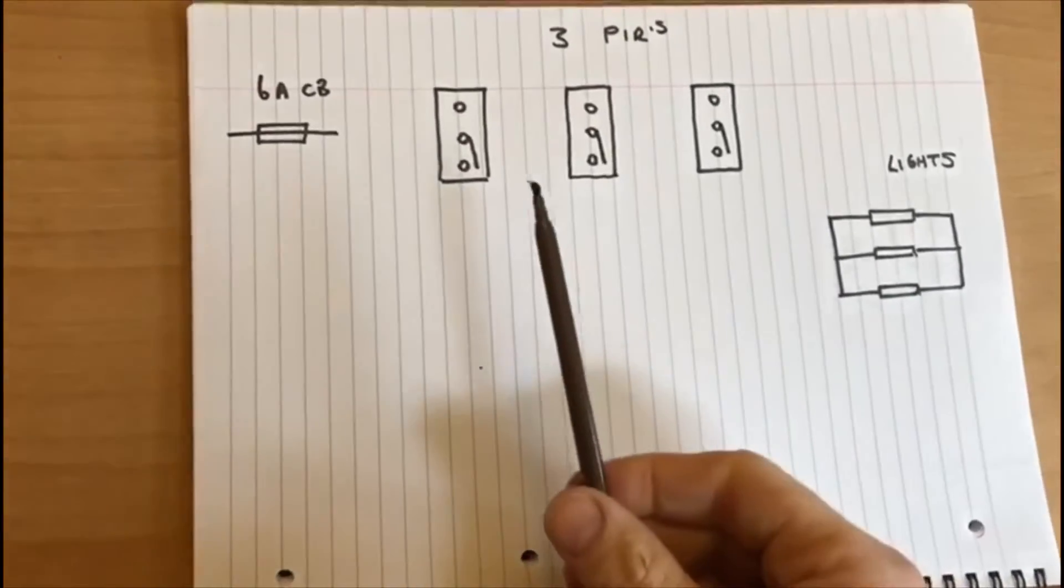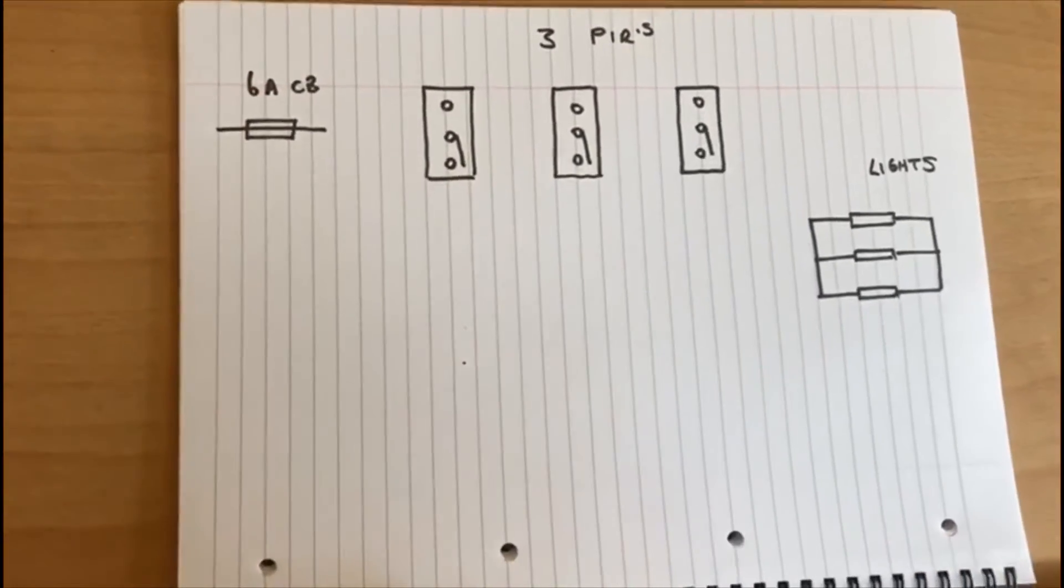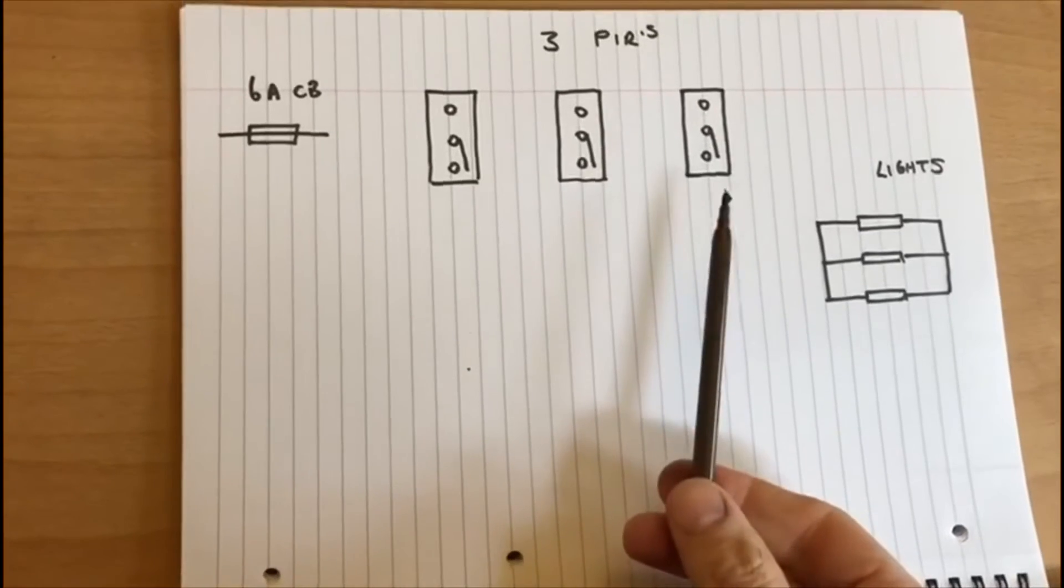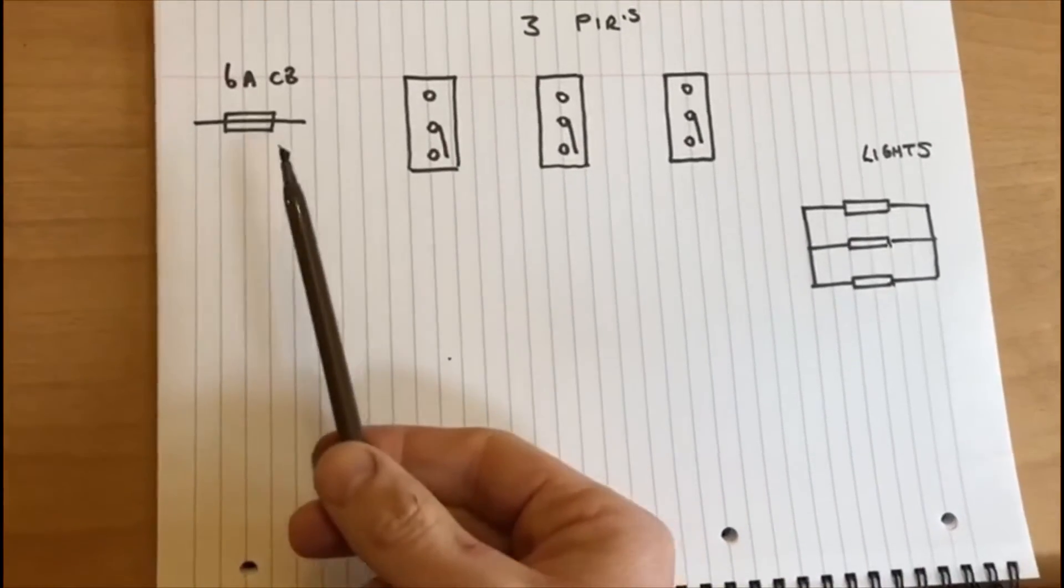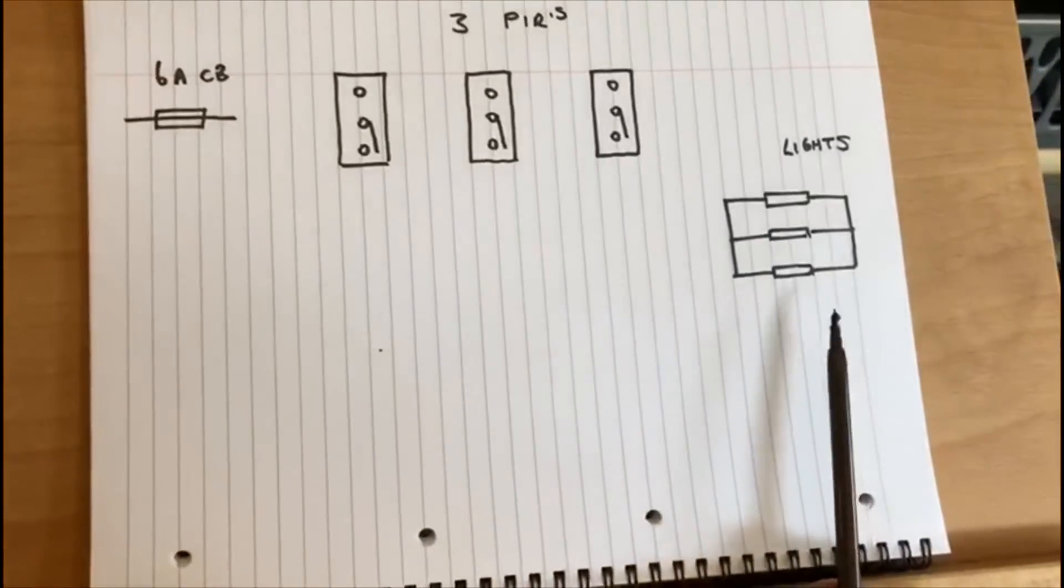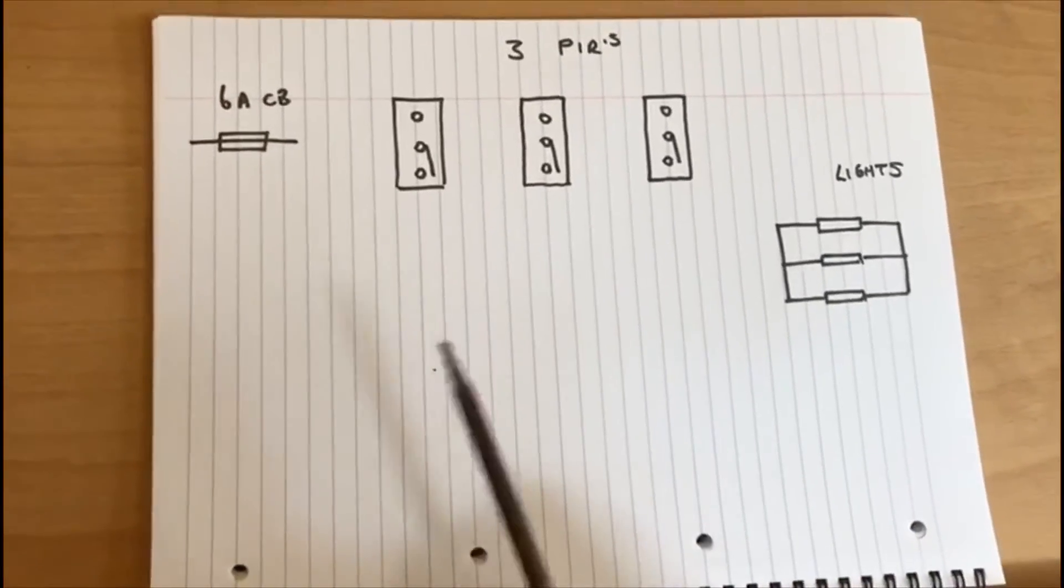This time I'd like to consider the use of more than one PIR. In this case we've got three PIRs working together. We've got a six amp circuit breaker and again we have our lights.